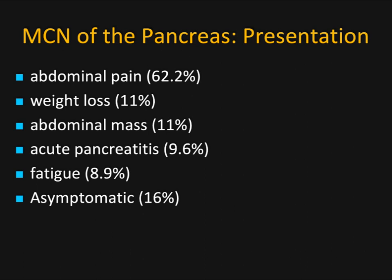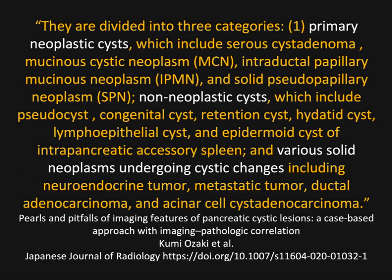In terms of numbers, presentation with abdominal pain is about 62%, but incidental findings are probably in the 20% range. A recent article on pearls and pitfalls of pancreatic cystic lesions divided the cysts into three categories: primary neoplastic cysts — serous cystadenomas, MCNs, IPMNs, and SPENs — non-neoplastic cysts such as pseudocysts, congenital cysts, or lymphoepithelial cysts, and solid neoplasms undergoing cystic change, including cystic neuroendocrine tumors, as well as occasionally adenocarcinoma or acinar cell tumors. MCN falls in the primary neoplastic cyst category.